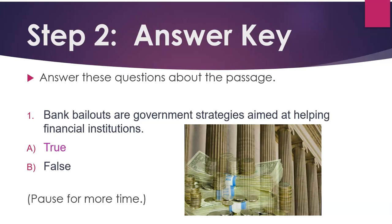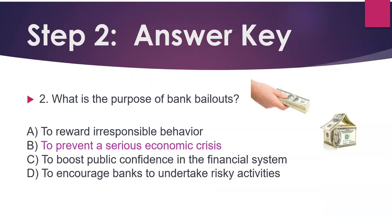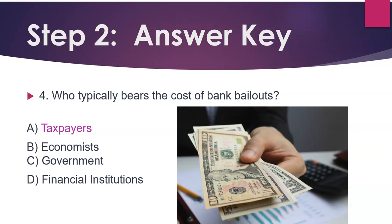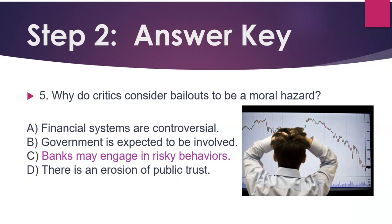Answer key. Number 1: Bank bailouts are government strategies aimed at helping financial institutions — True. Number 2: What is the purpose of bank bailouts? — To prevent a serious economic crisis. Number 3: What is one consequence of bank bailouts? — Rewarding irresponsible behavior. Number 4: Who typically bears the cost of bank bailouts? — Taxpayers. Number 5: Why do critics consider bailouts to be a moral hazard? — Banks may engage in risky behaviors.